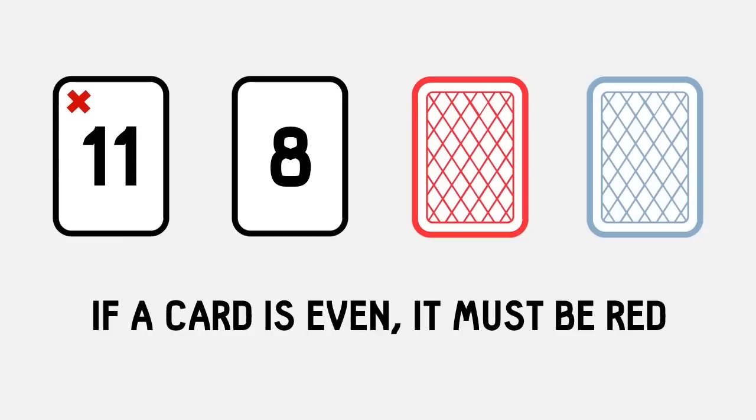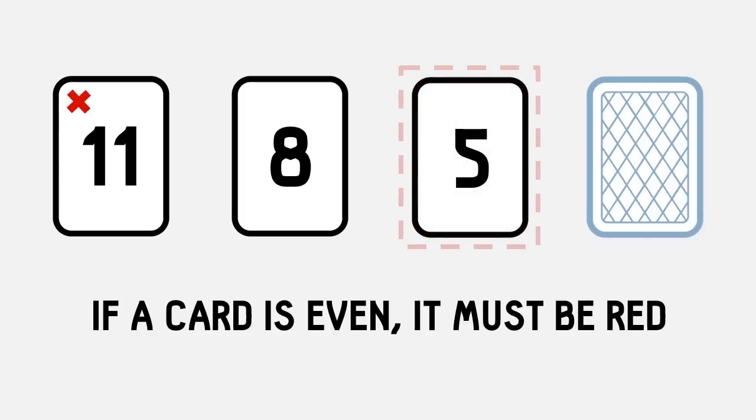Now, a common mistake is to choose the red card. But if you turn over the red card and it has an odd number, this doesn't actually break the rule. The rule was only if a card was even, did it have to be red.